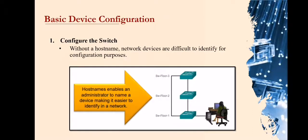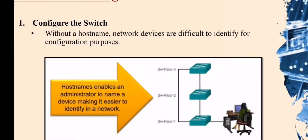We now go to the basic device configuration. We have multiple steps in configuring devices. The first step in basic device configuration is configuring the switch — specifically, assigning a unique device name or host name. Without a host name, network devices are difficult to identify during the configuration process. A host name enables an administrator to name a device, making it easier to identify.